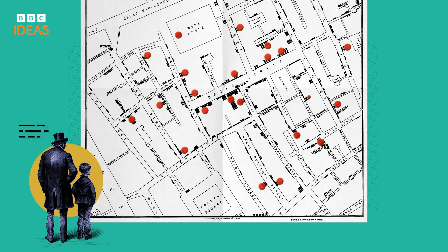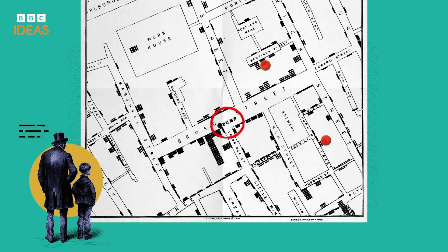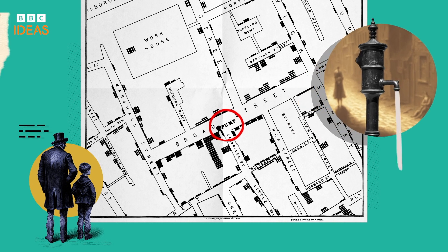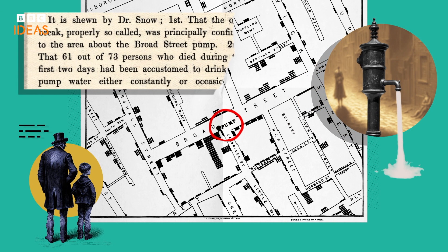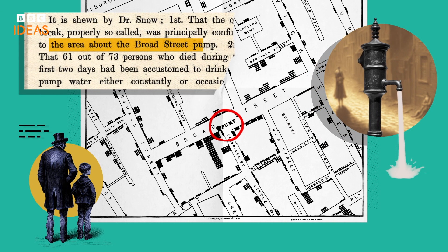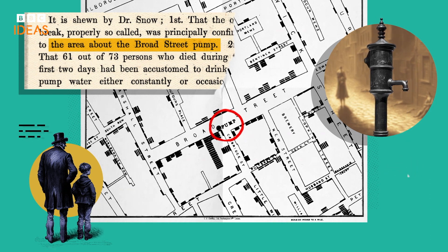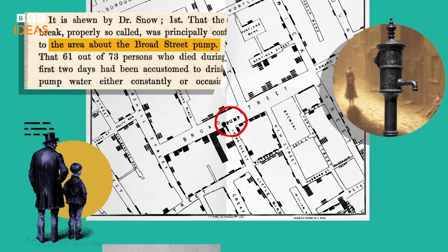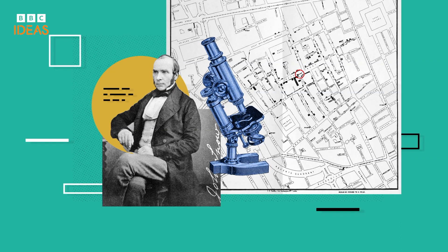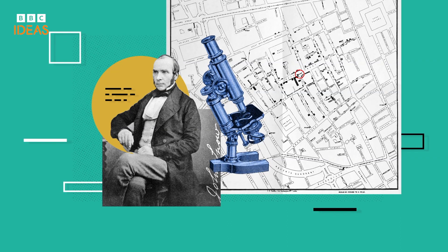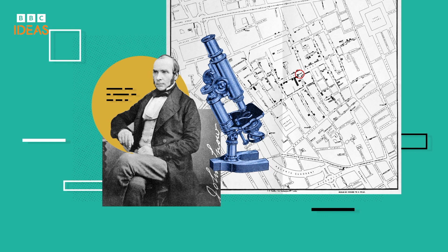A clear picture emerged. All the deaths from cholera were clustered around a water pump on Broad Street. When he presented his findings to the local officials, the pump was shut down and the outbreak ended. Dr. John Snow fundamentally changed our understanding of microbes, and his simple dot maps were a huge part of that.